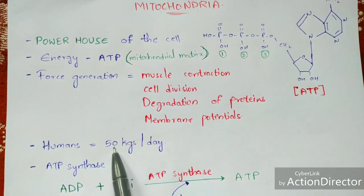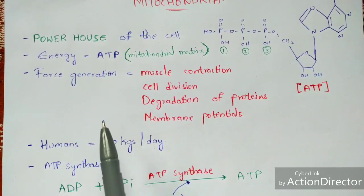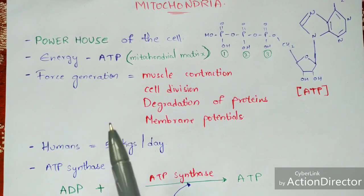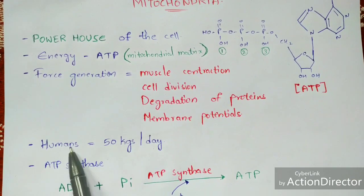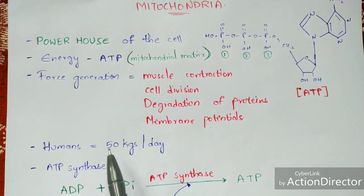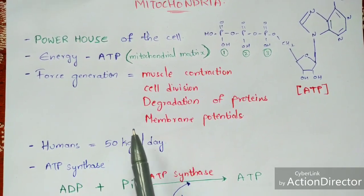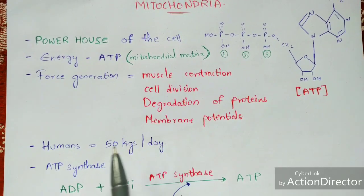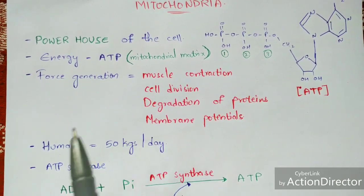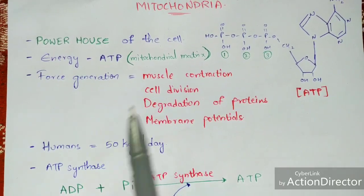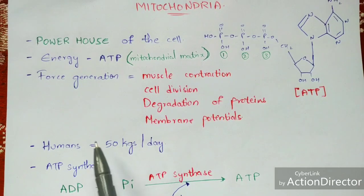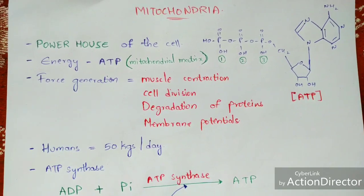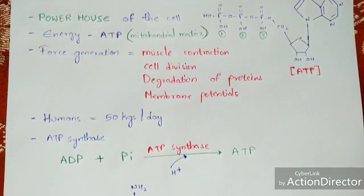One important thing to remember is that in adult human beings, 50 cases of ATP energy will be generated per day in the body.